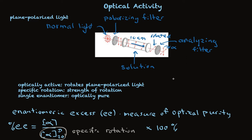And the designation, whether that rotation is clockwise or counterclockwise, is either clockwise, which is designated as plus or d (lowercase d, not capital D), or counterclockwise is minus or l.